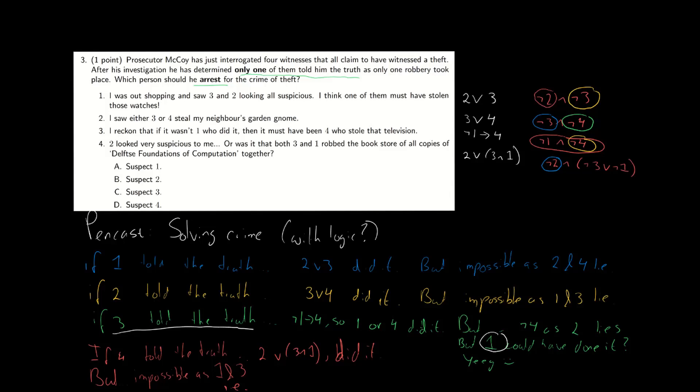But yes, there you have it. Three must have told the truth. And as a result, one must have done it. So let's arrest suspect one and let's get back that television. With that, we've come to the end of the video. Hopefully this question is a little bit clearer now. I'll see you around for the next one.